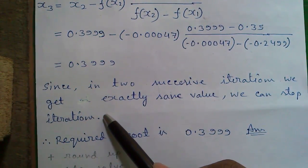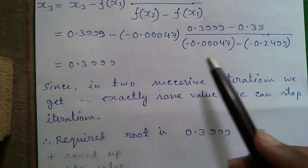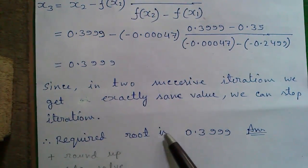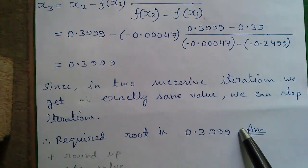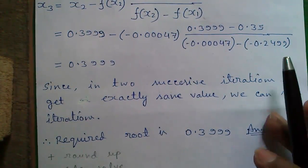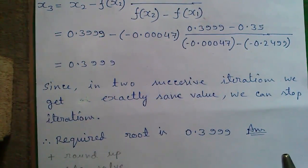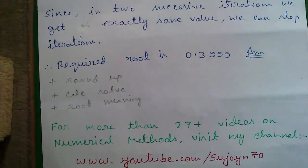Since in two successive iterations we get exactly same value we can stop the iteration. You can stop the iteration if you get almost equals to value also. So our required root is 0.3999. You can also round it up if needed.